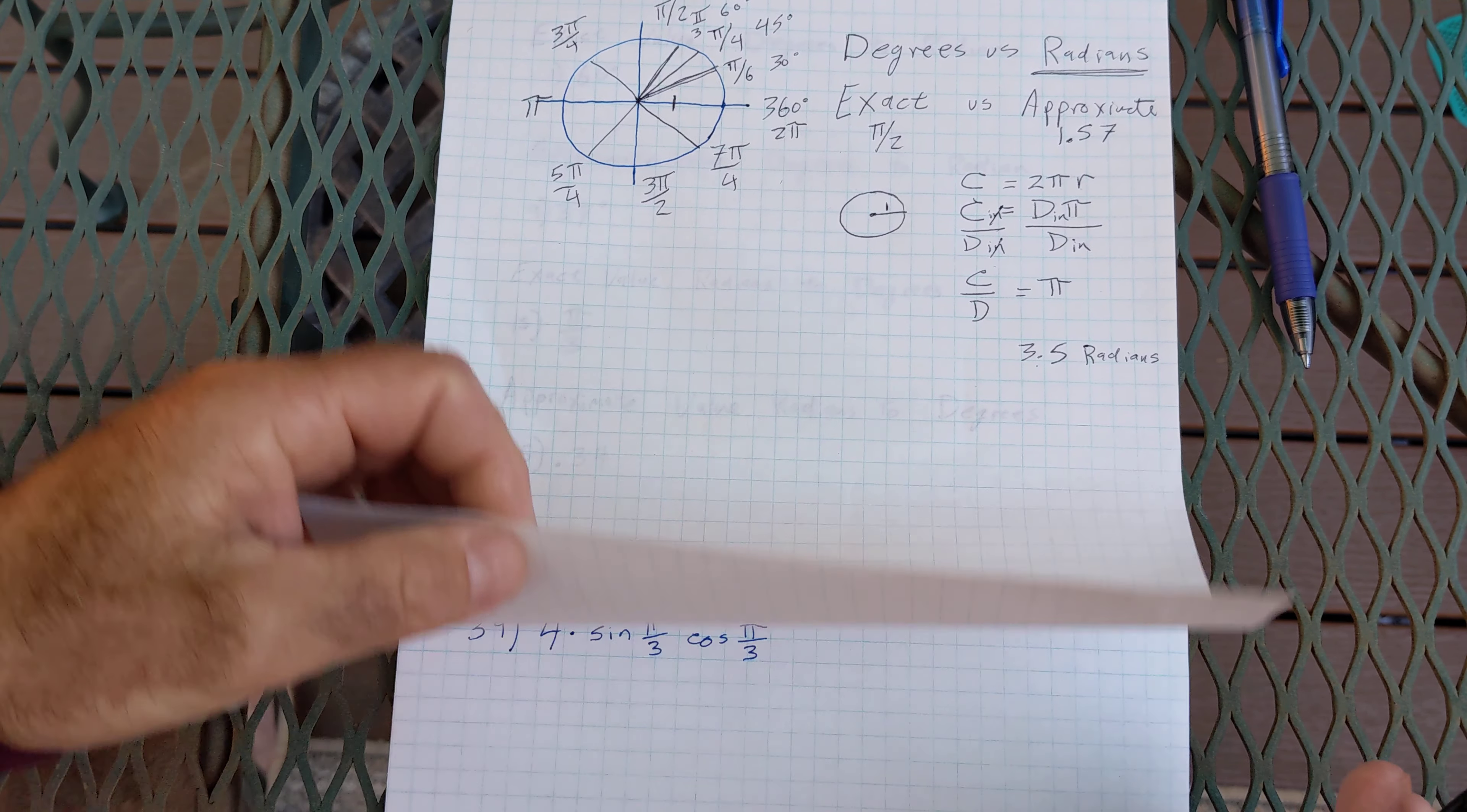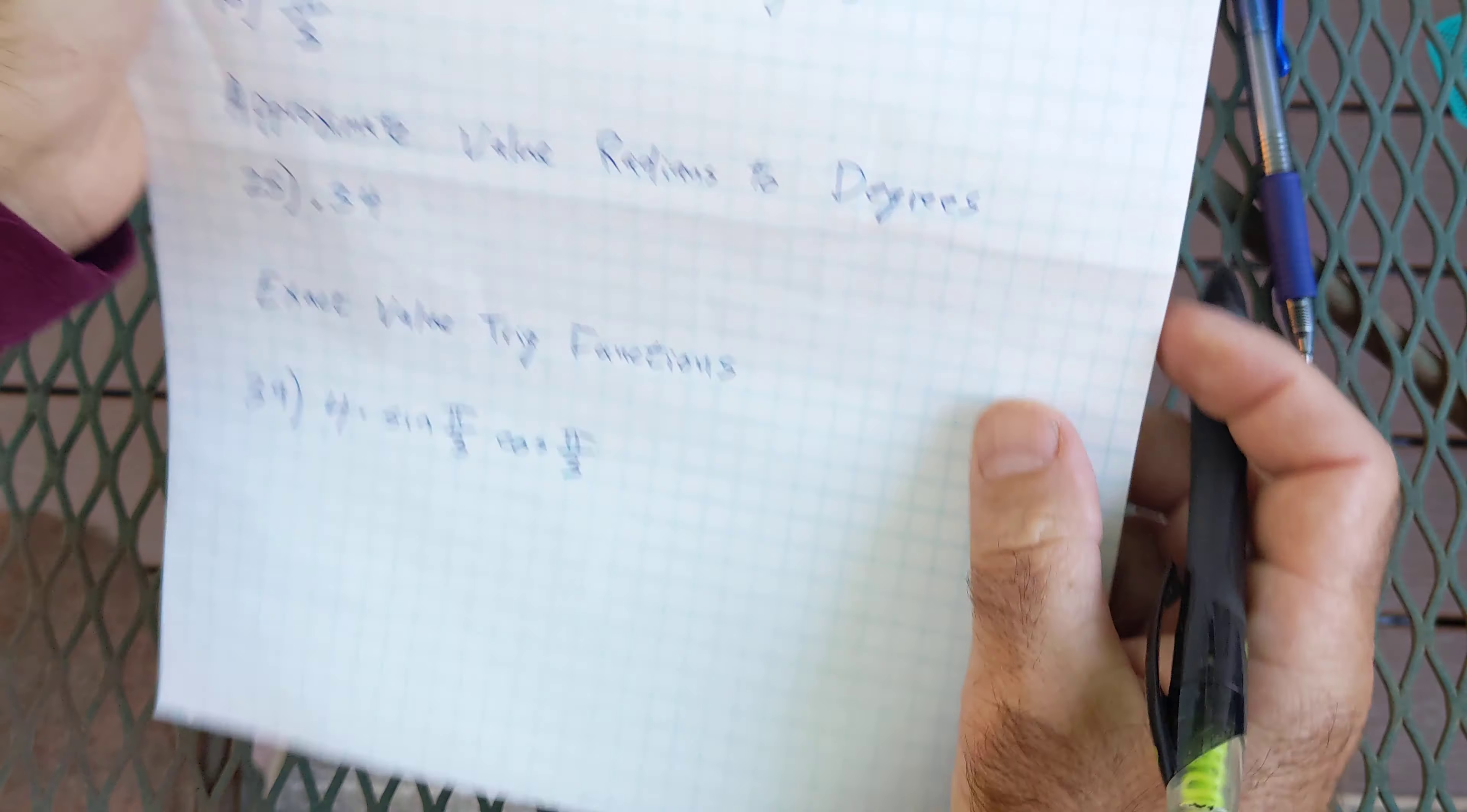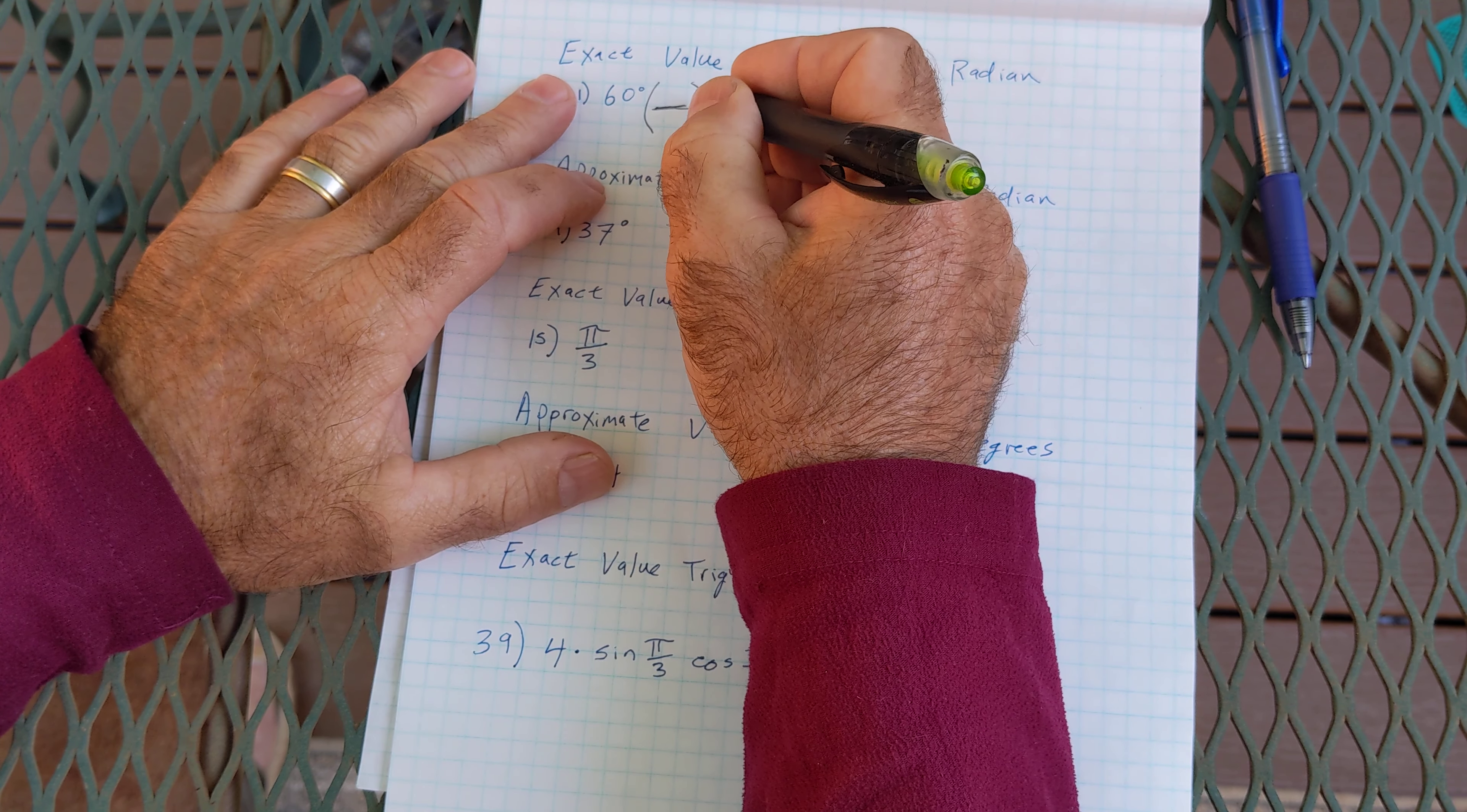Okay, let's jump ahead to some type of problems. The exact value means without a calculator. This is just a number 60 degrees. I can only multiply by 1 so as not to affect the value. So I'm going to multiply by a factor of 1 which means the numerator and denominator have to have the same weight.